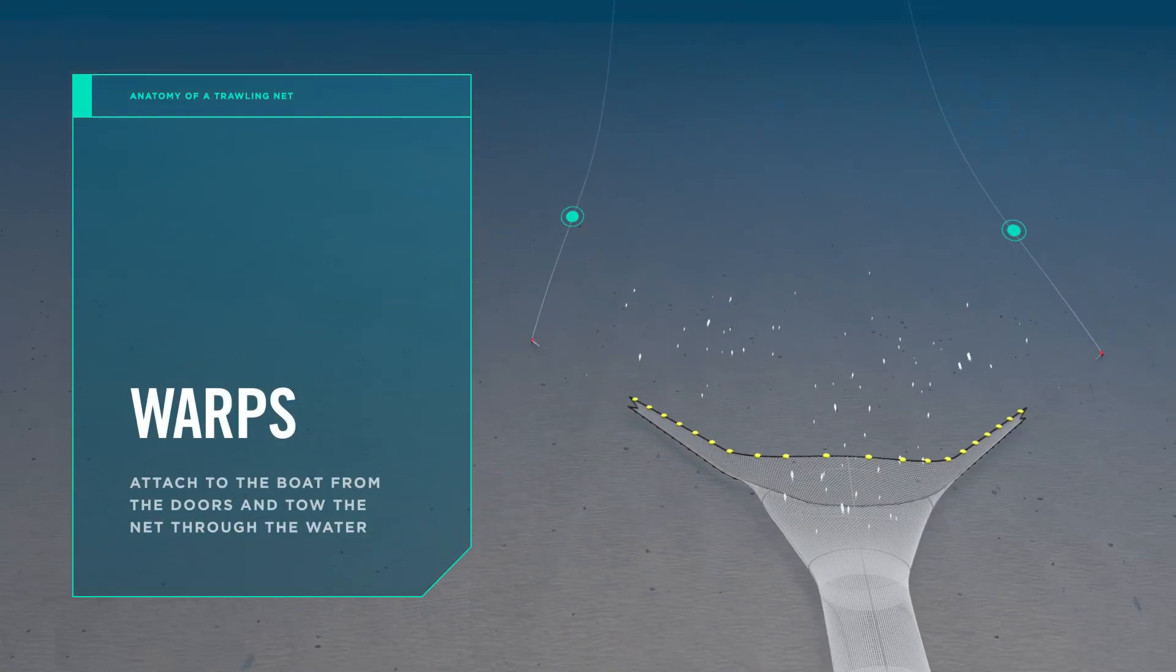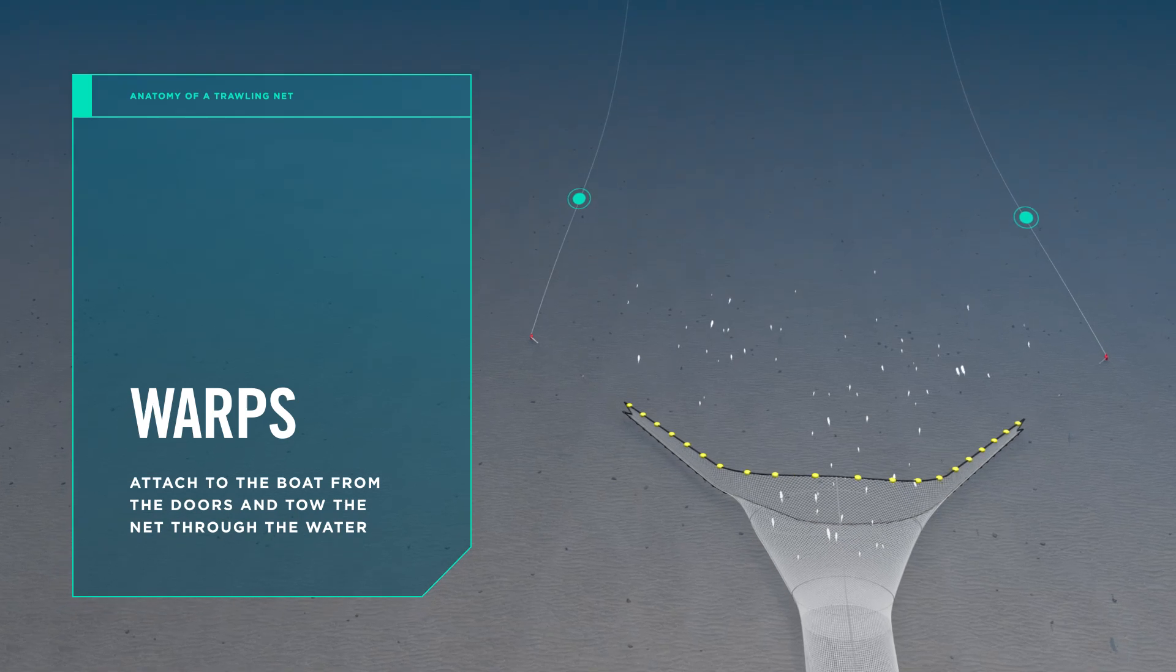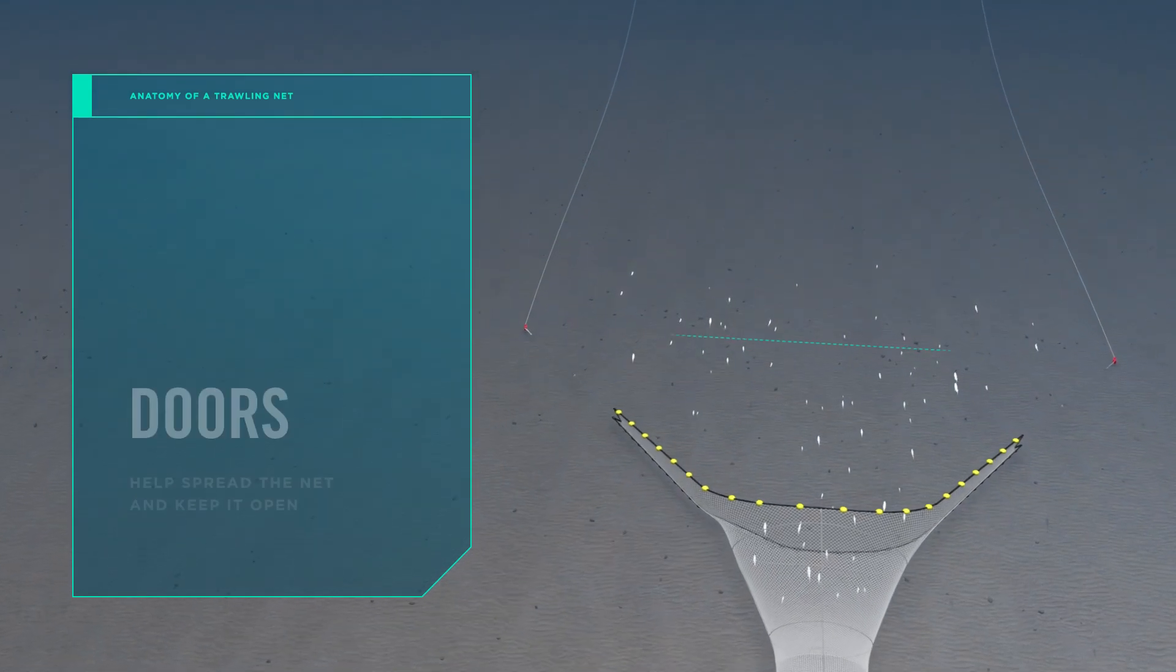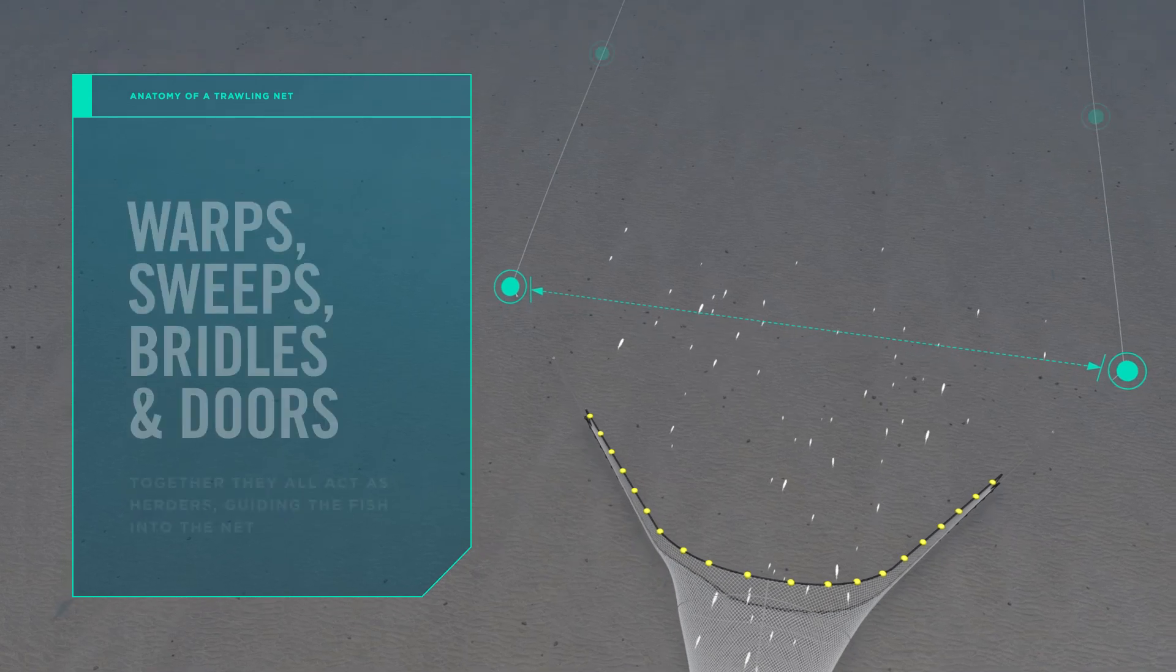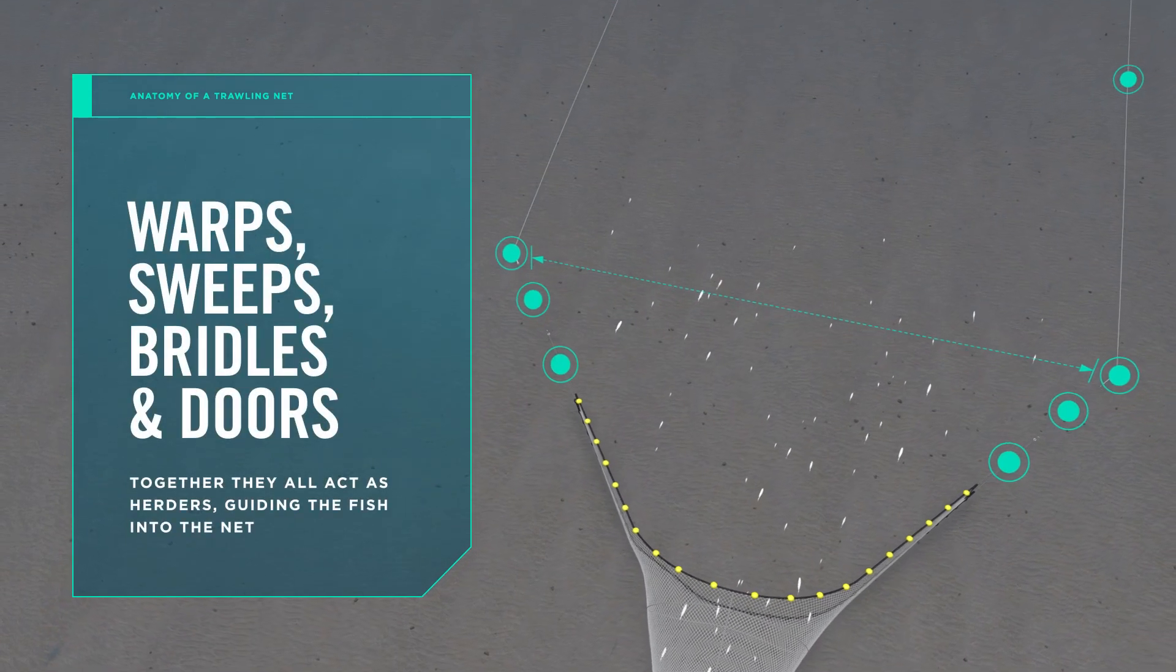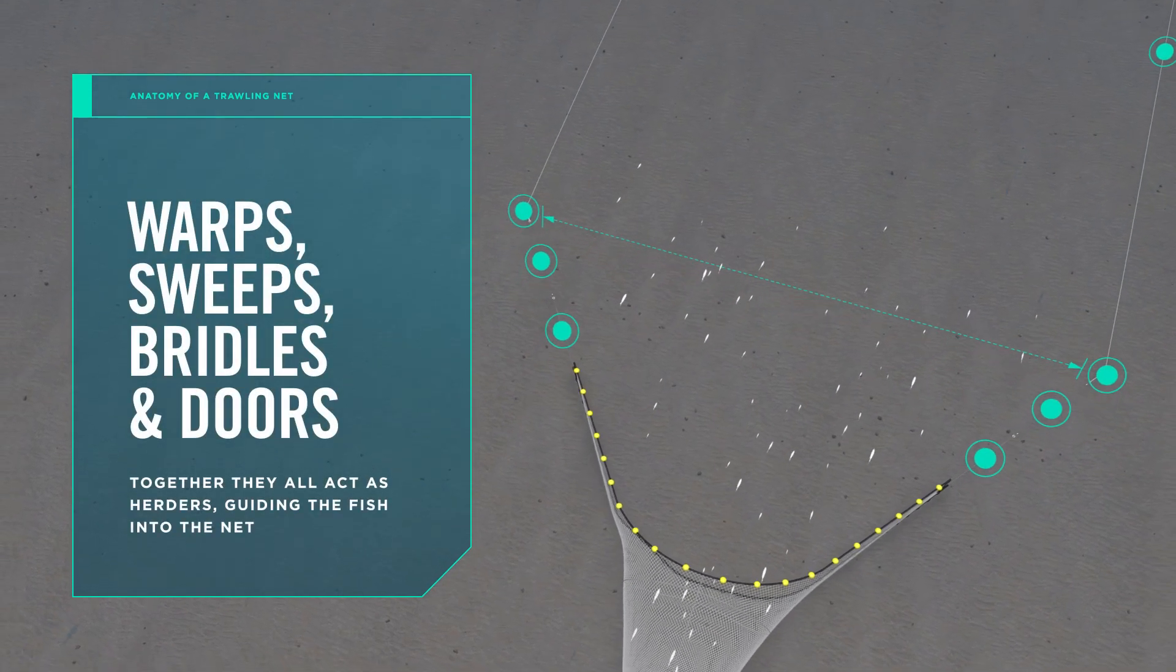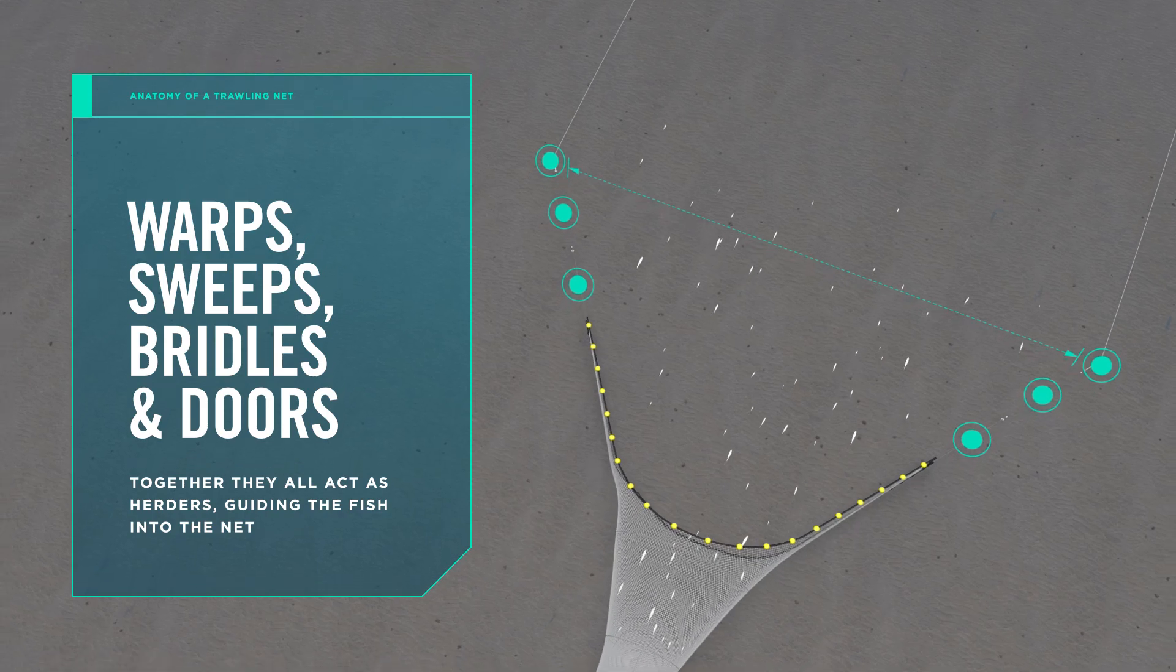The warps attach to the boat from the doors and tow the net through the water. The doors are designed to spread the net and keep it open. Together, the warps, sweeps, bridles and doors act as herders, guiding fish into the net.